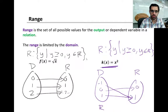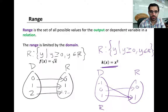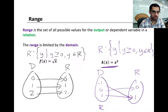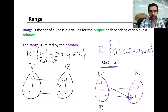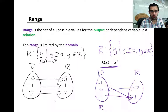Range is similar, except instead of talking about x values, range is talking about y values — the vertical axis. It's all possible values for the output, also called the dependent variable. Whatever you can get in the range is dependent on what was in the domain in the first place. For a square root of x function, the domain was only zero and up, which means that if you square root a number it stays positive — you can't square root a positive number and get a negative.